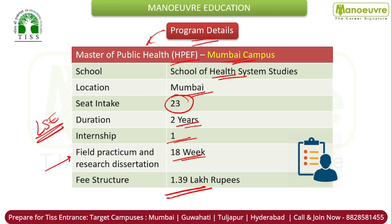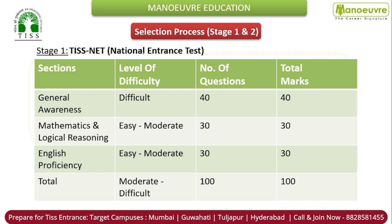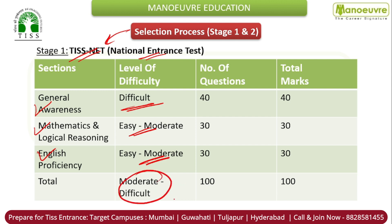Now let's check out the selection process — how you can pursue this program. The first step is the DISNET entrance examination, a national entrance exam that you need to crack. The exam is divided into three sections: General Awareness — difficult level; Mathematics and Logical Reasoning — easy to moderate; English Proficiency — easy to moderate. Overall difficulty is moderate to difficult. The GK section has 40 questions for 40 marks — GK is the dominating area here, requiring a lot of preparation from day one, and there is a sectional cut-off as well.